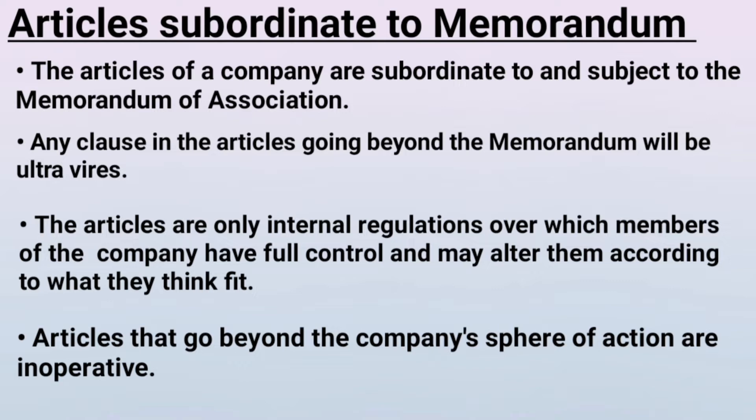The second point is: any clause in the articles going beyond the memorandum will be ultra vires. If any article goes beyond the memorandum, beyond the circle, then it will be called ultra vires. Ultra vires means void, which means illegal.